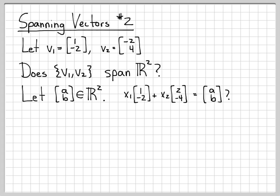So what we're trying to determine is, is this equation true? Can I find some number x1 and multiply v1 by it, find some number x2 and multiply v2 by it, add those up, and get [a, b] in general for any arbitrary [a, b] that I have selected as a vector from the space R²?